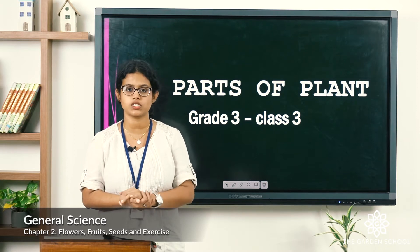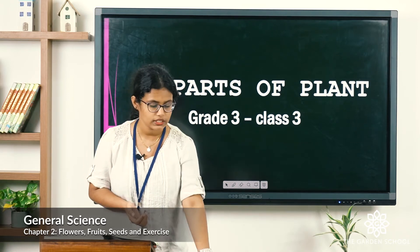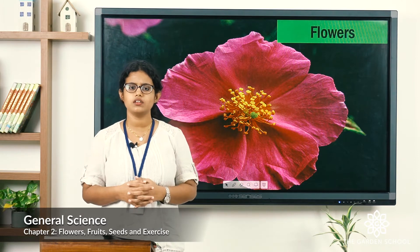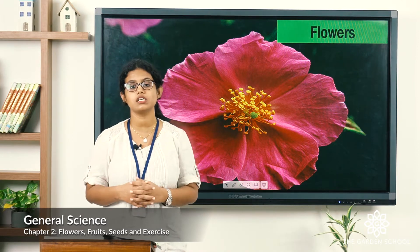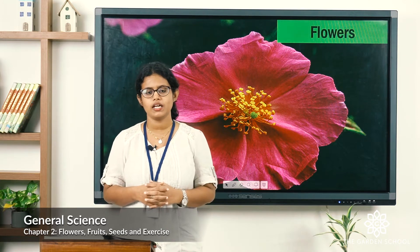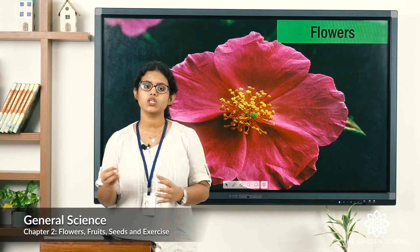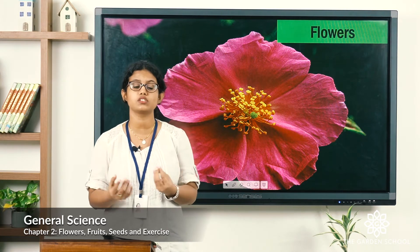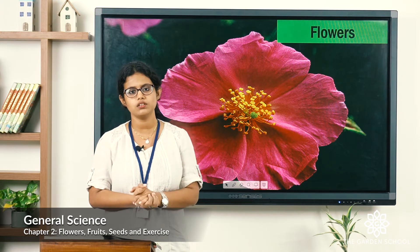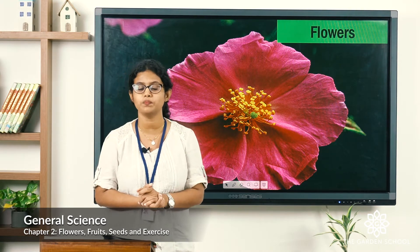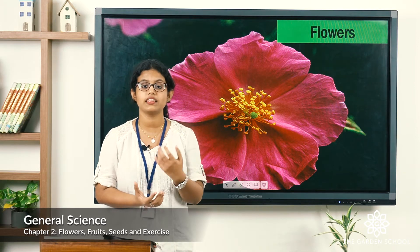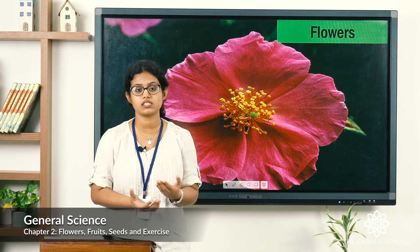Let's discuss the first one, that is the flower. The flower is the most colourful part on a stem. When you look around, you can see different kinds of flowers. Are all flowers the same? No. Flowers differ in their colour, shape and size.